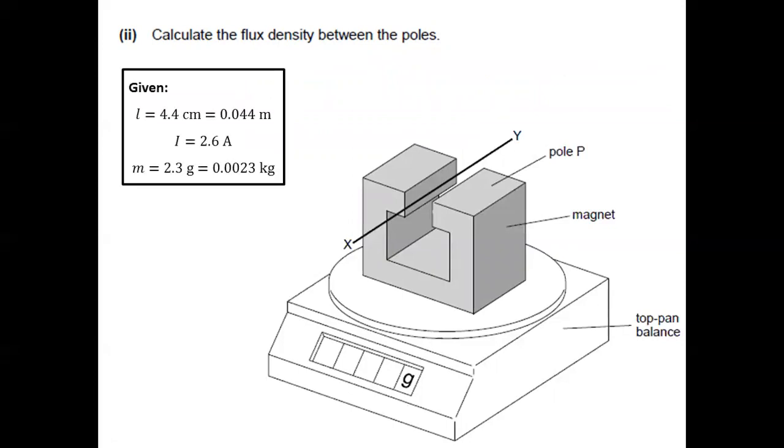So we have here our given information. Then let's look at the equations. In this question, we are asked to solve for the flux density, which is represented by the variable capital B. And since we are dealing with a current carrying wire, we will be dealing with this equation, which is F equals BIL or the magnetic force acting on the wire is equal to the product of the flux density times the current times the length of wire exposed to the field.